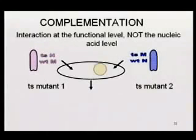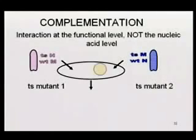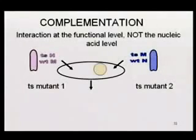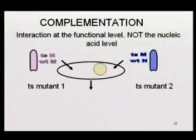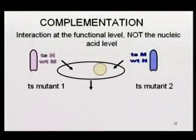Here we have a model pink virus which looks like a rhabdovirus. This one has a temperature sensitive N protein — at higher temperatures it will fall apart and not function. N stands for nucleocapsid. Its maturation protein is wild type, so it's just got a mutation in its nucleocapsid protein. The blue mutant 2 has a perfectly good nucleocapsid protein but has a mutation in its maturation protein.